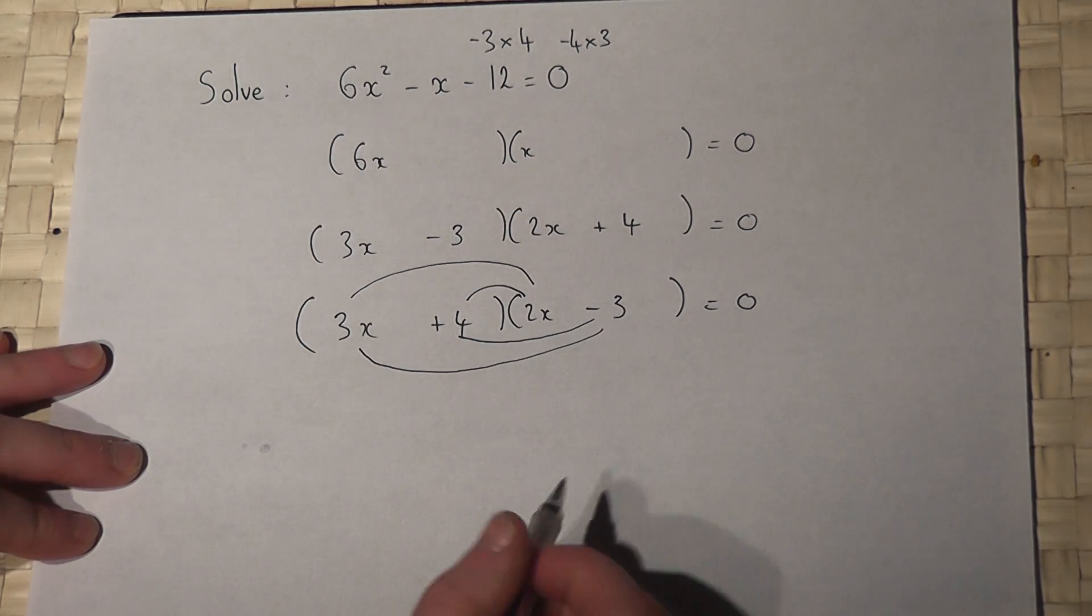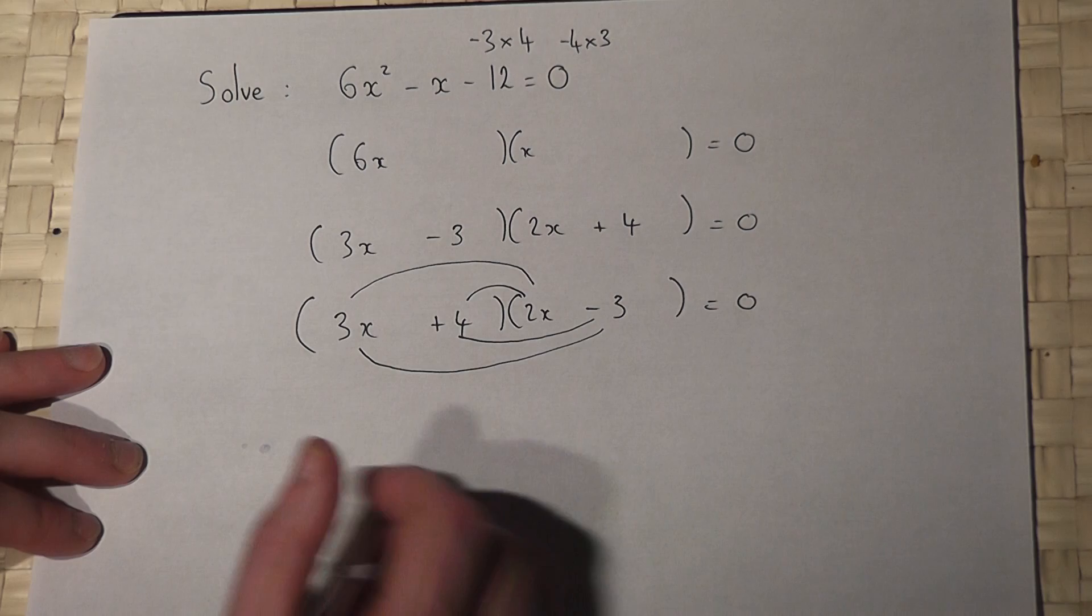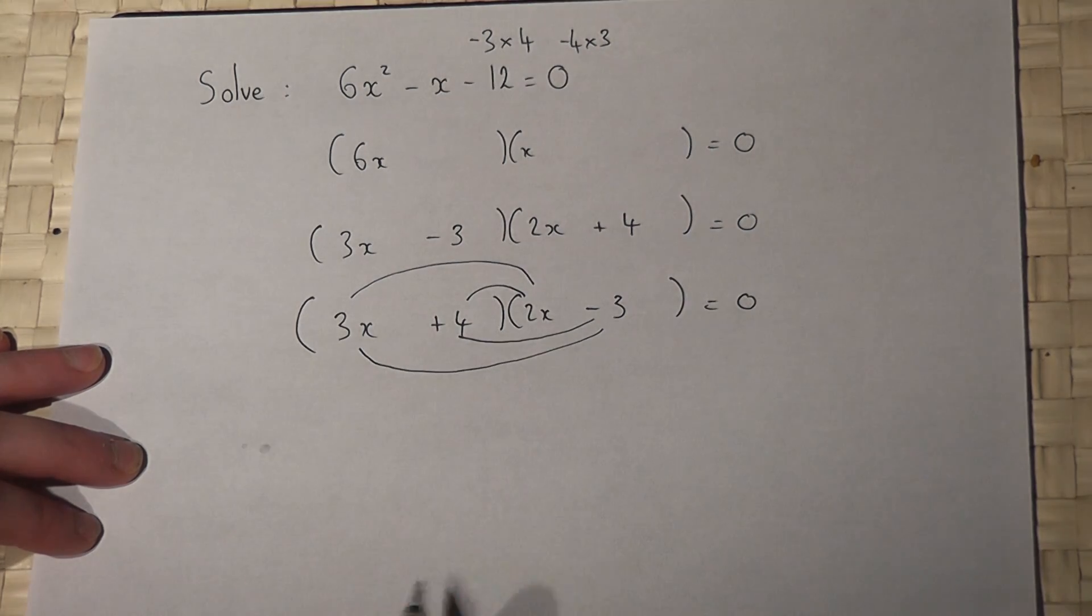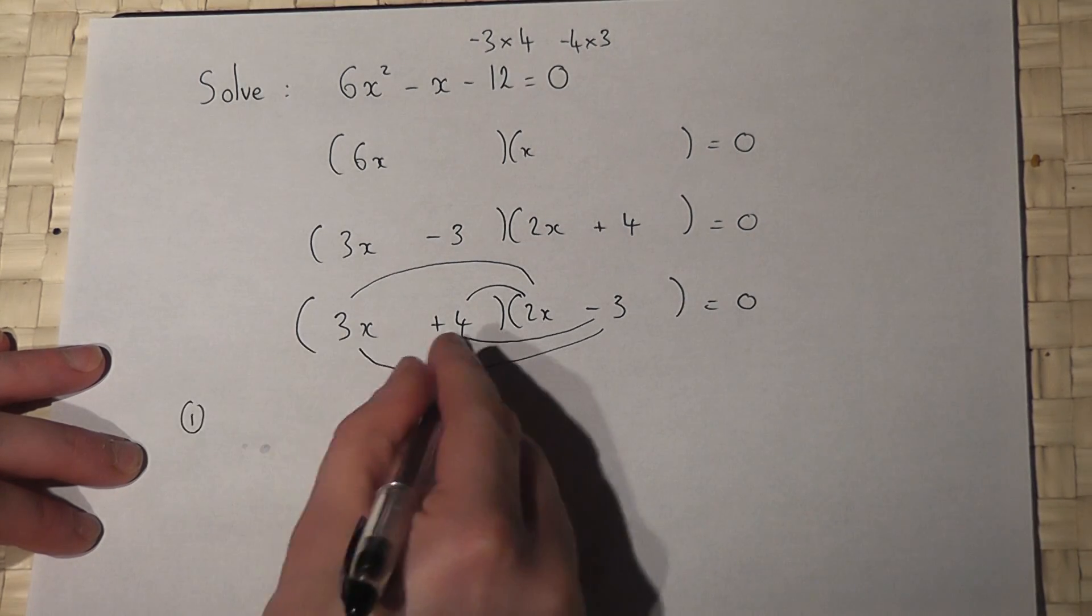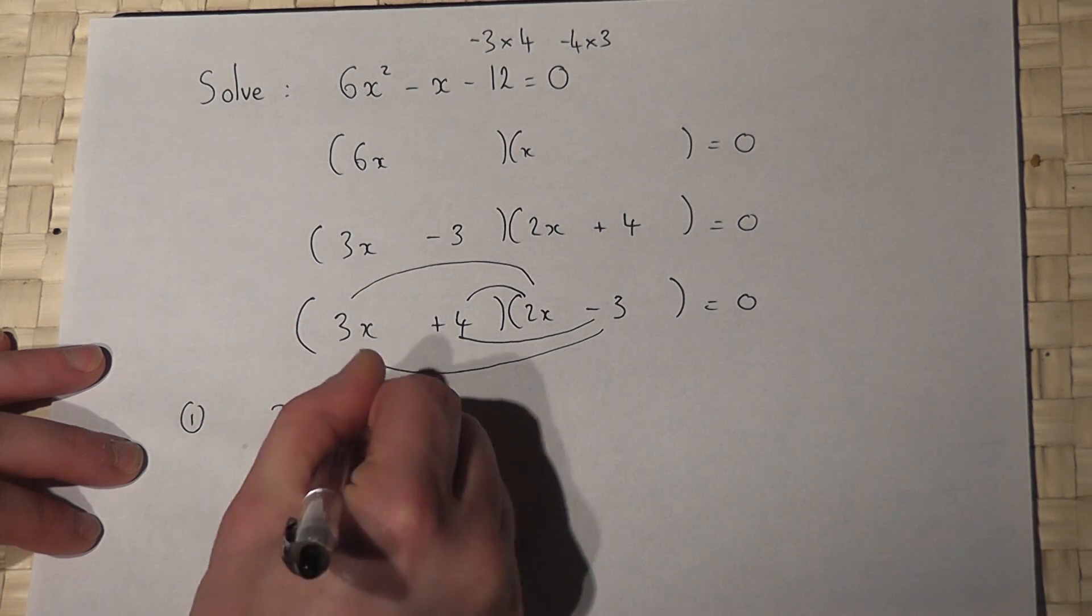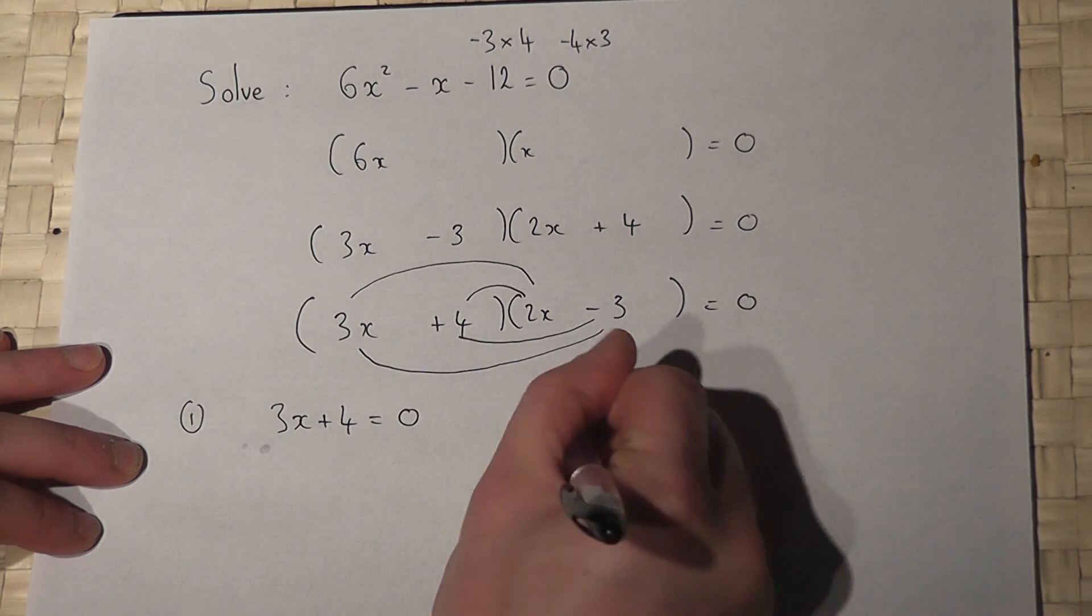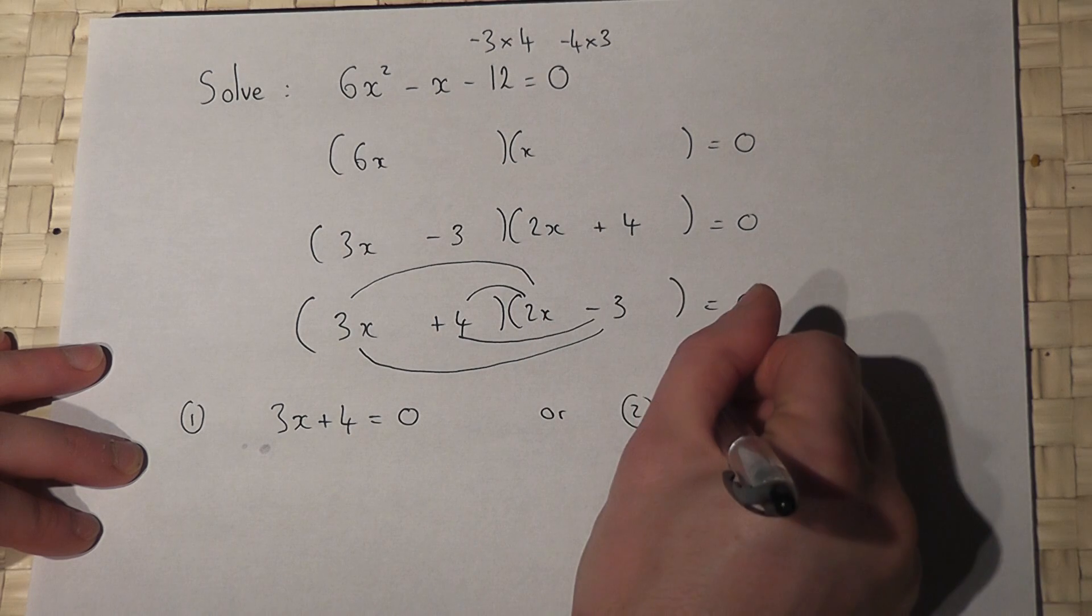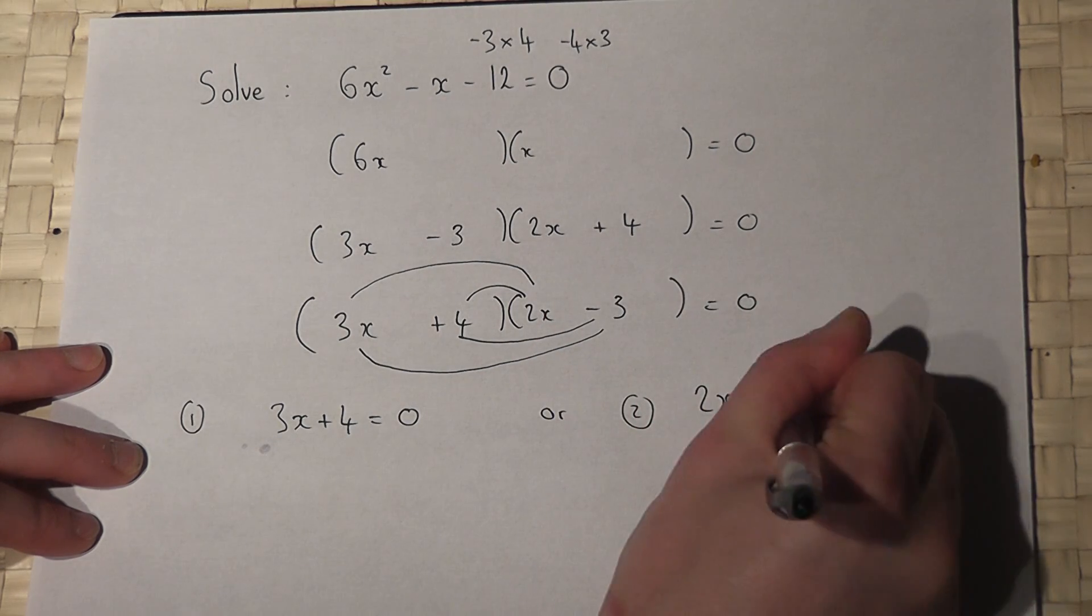Right then, to find x, I've got to solve two equations. Because it equals 0, the options are either this bracket is 0, so 3x plus 4 equals 0, or this bracket is 0, so 2x take 3 is 0.